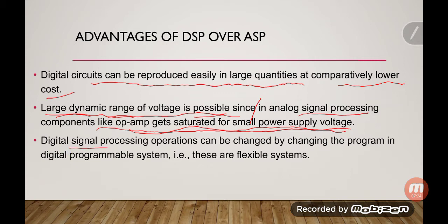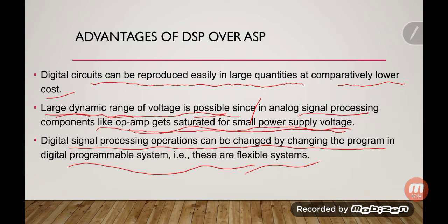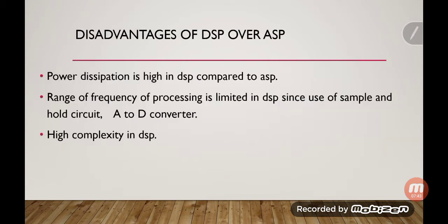Operations in DSP can be changed by changing the program in a digital programmable system. These are flexible systems — you just need to change a few numbers or some program in the digital programming system to change the operation.